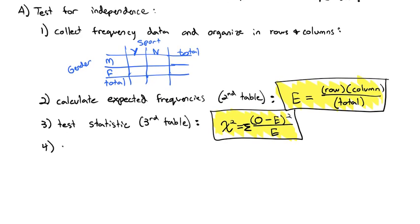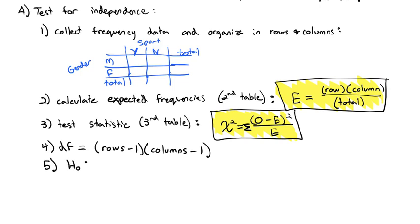As we're testing for independence, we need to know the degrees of freedom, which equals the number of rows minus 1 times the number of columns minus 1. Similar to the goodness-of-fit test, the null hypothesis and the alternative hypothesis are generally stated in words, not symbols. The null hypothesis is that the variables are independent, and the alternative hypothesis is that they are not independent — or that they are dependent. And similar to the goodness-of-fit test, the test for dependence is always a right-tailed test.